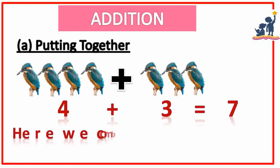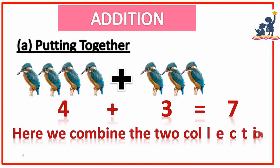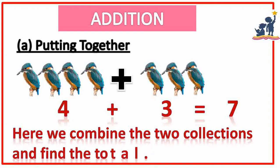Number A: putting together. Here, 4 plus 3 is equal to 7. Here we combine the two collections and find the total.